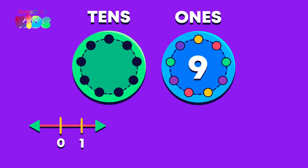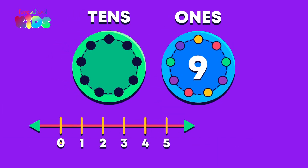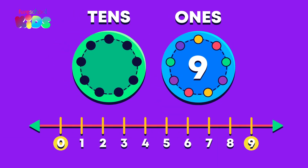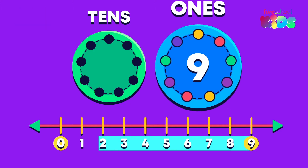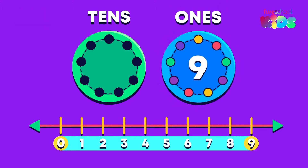We counted from zero to nine. These numbers are the ones because they are made up of one digit or number. The ones belong in the ones place on my place value chart.